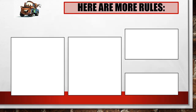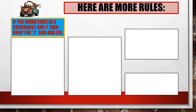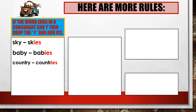Here are more rules. If the word ends in a consonant and Y, then drop the Y and add IES. Here are some examples: one sky, many skies. One baby, many babies. One country, many countries. One party, many parties. One assembly, many assemblies.